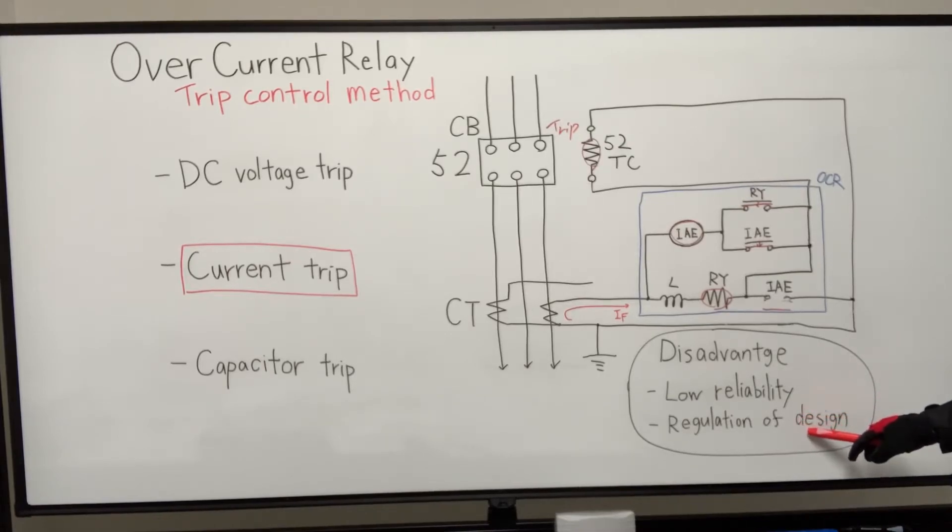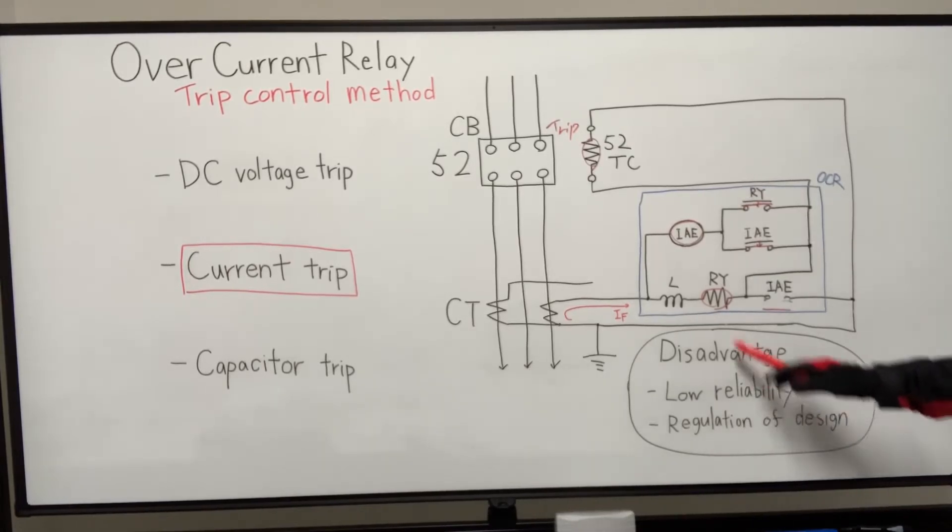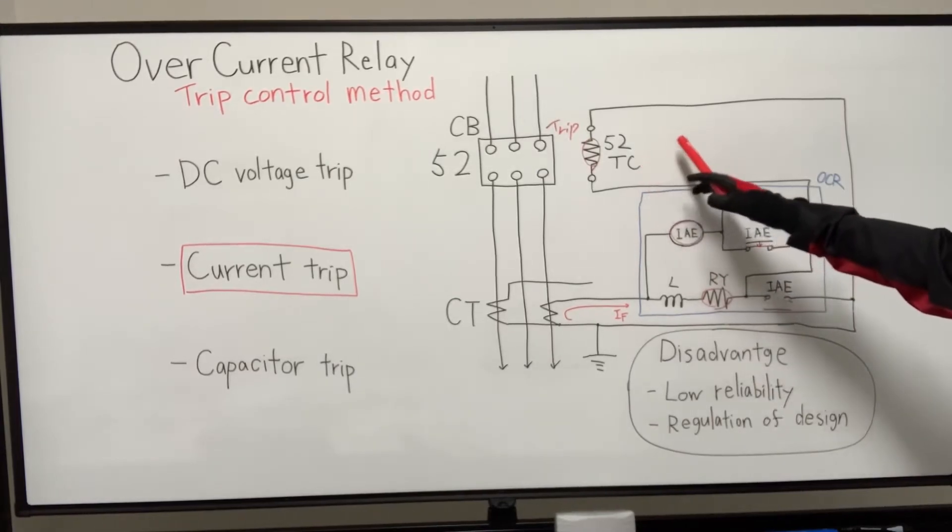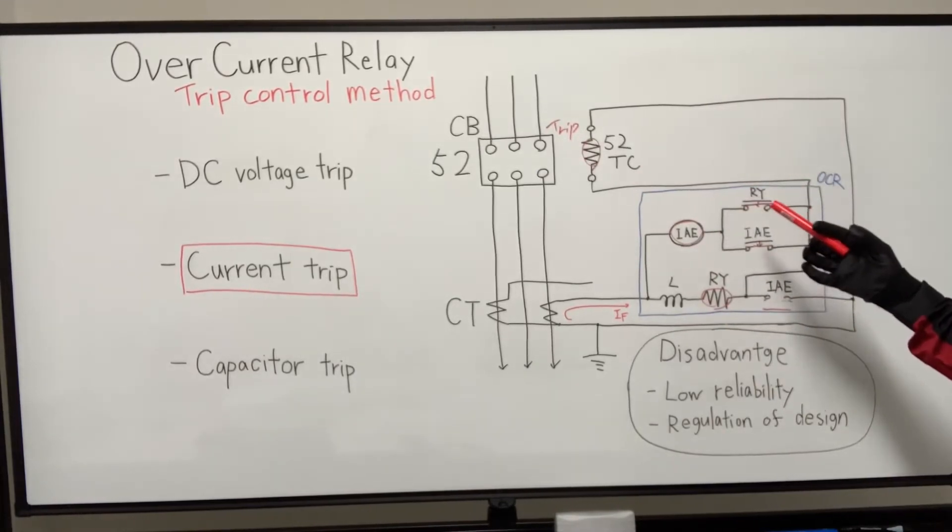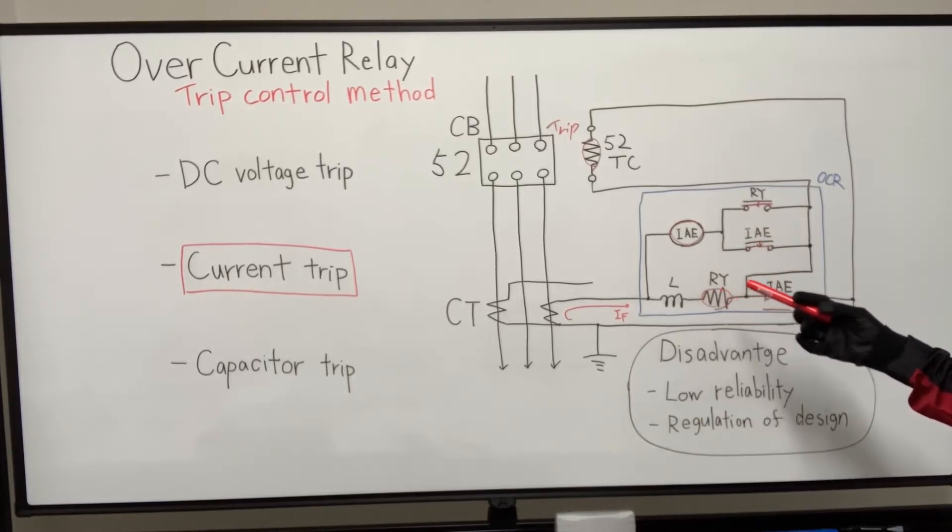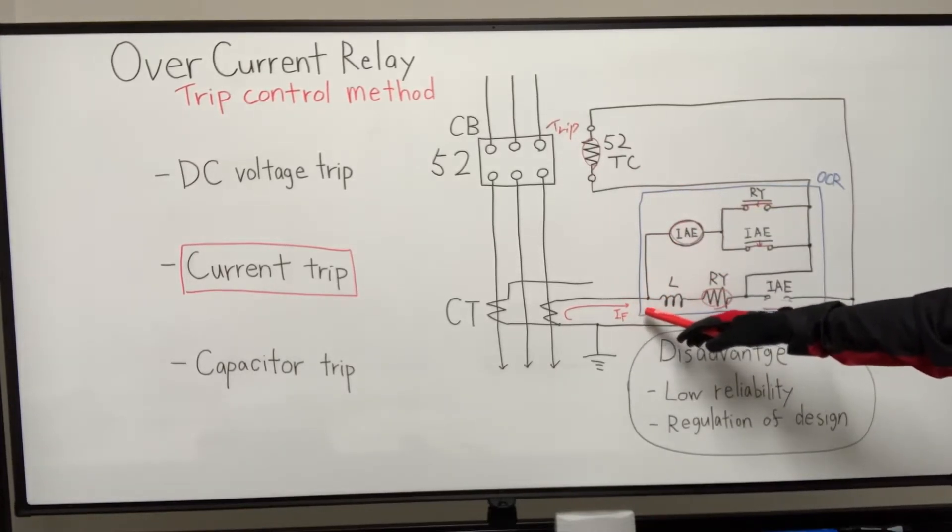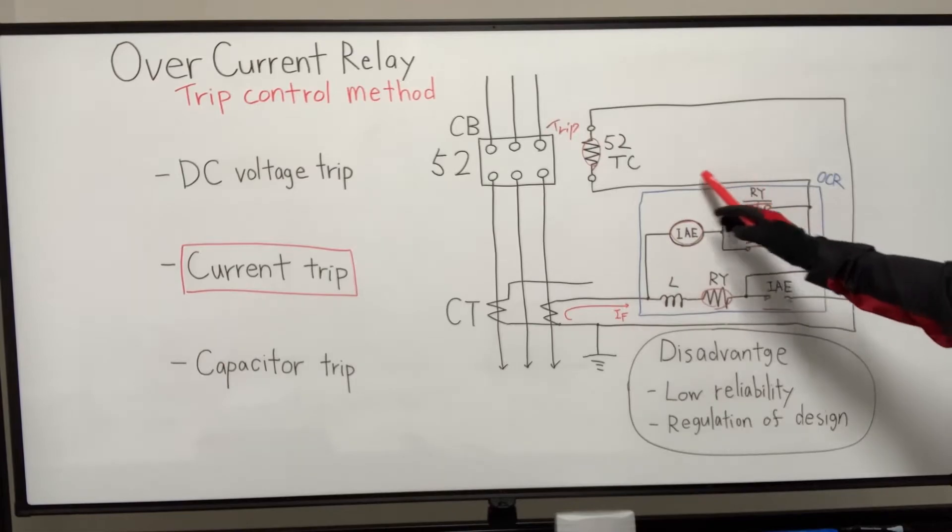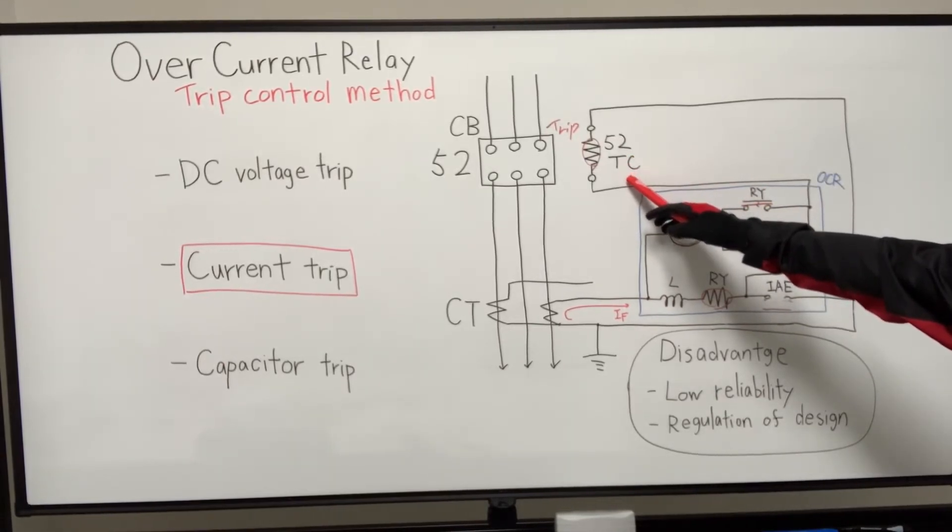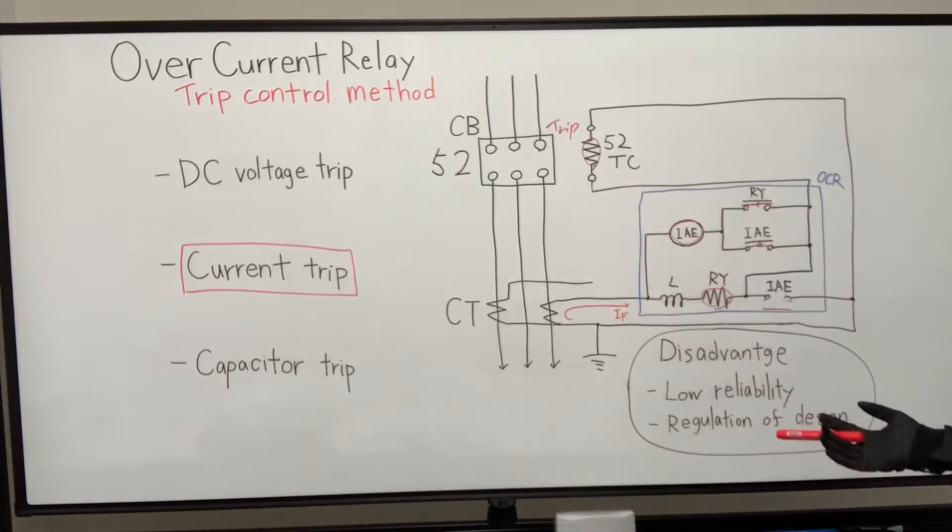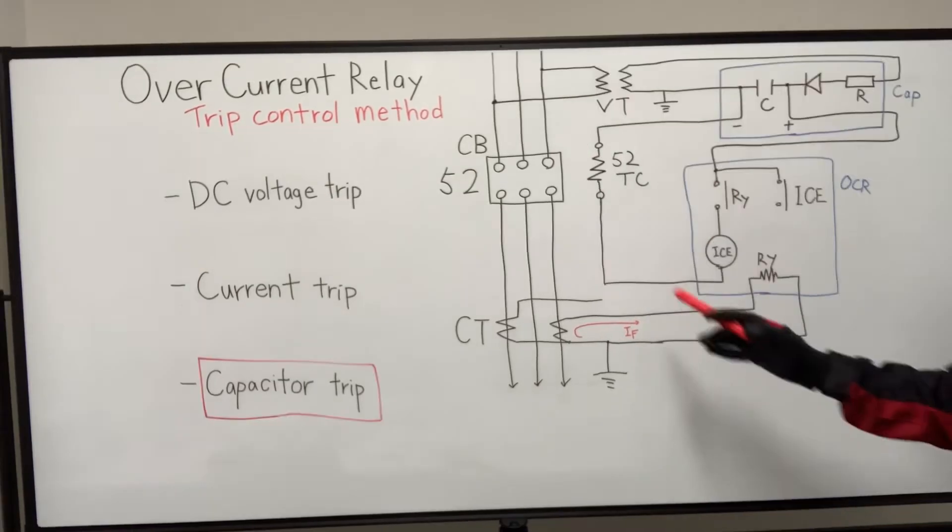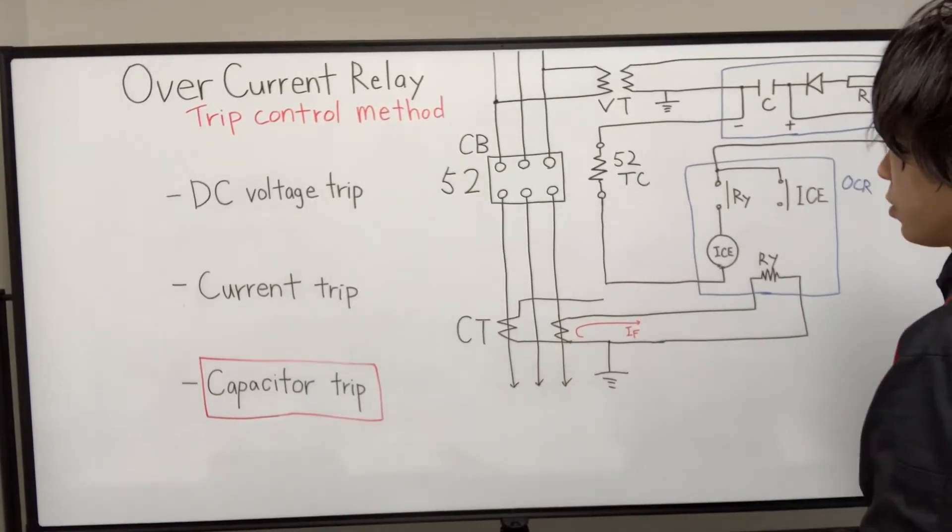And also, we need to take into account the trip coil has a minimum operating current value. And the CT secondary current should be greater than this minimum operating current. So it's kind of a regulation of designing. So we need to consider it. So I think it's sort of this advantage.